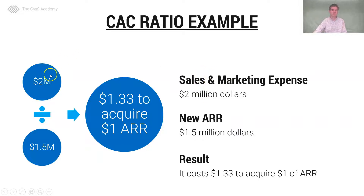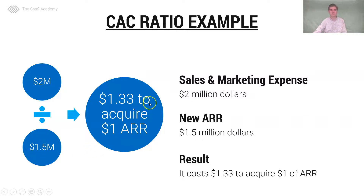A simple CAC ratio example: let's say our sales and marketing expense was two million dollars — that goes in the numerator. Our new ARR coming into the business from new and existing sources was 1.5 million. So that means it cost $1.33 to acquire one dollar of ARR.